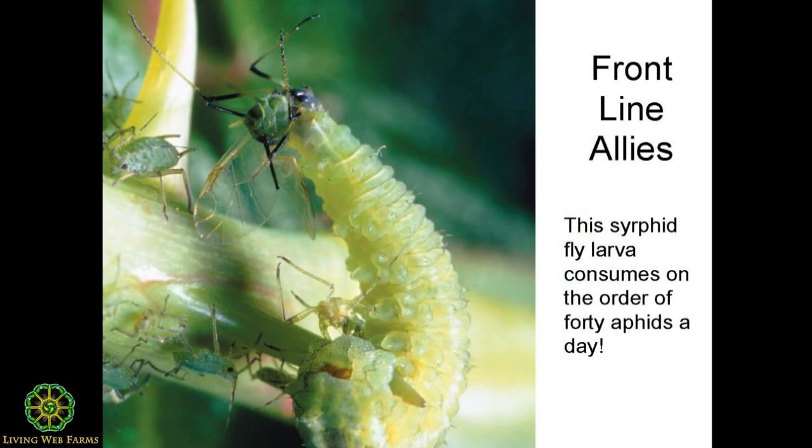One example is the syrphid fly, the hovering fly. It's golden and can sometimes be mistaken for a honeybee, but it hovers and has two big wings, so it's not rapidly moving its wings — it's a fly. It's attracted to composite flowers like hardy marguerite, and also to buckwheat. The syrphid fly lays its egg where it sees a lot of aphids, and that egg becomes a little larva that eats 40 aphids a day.